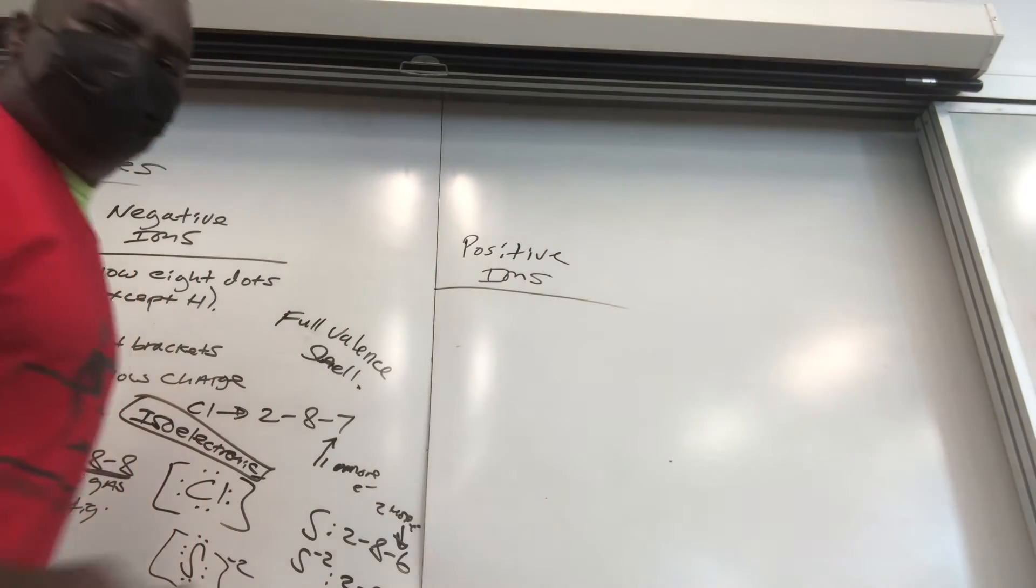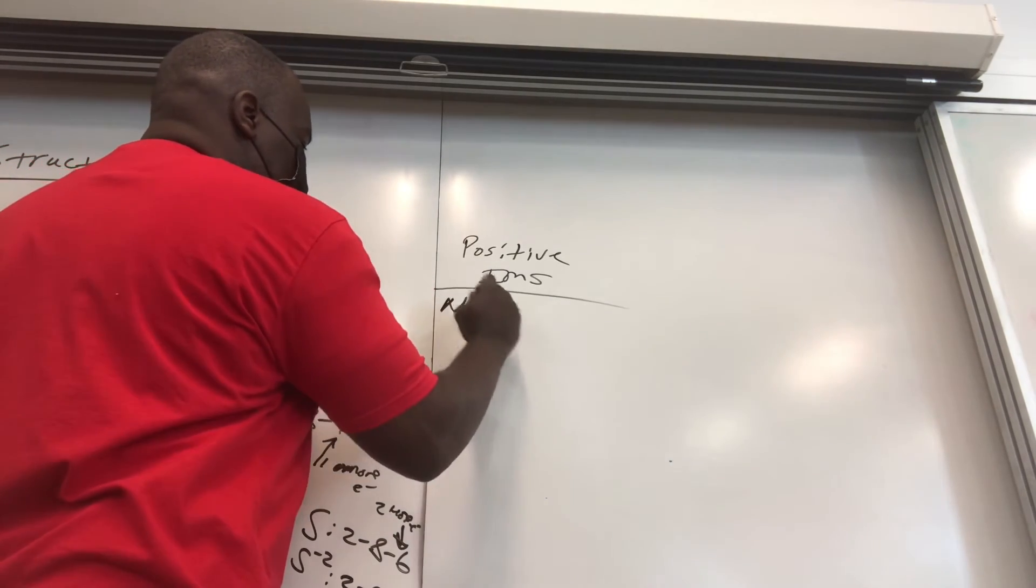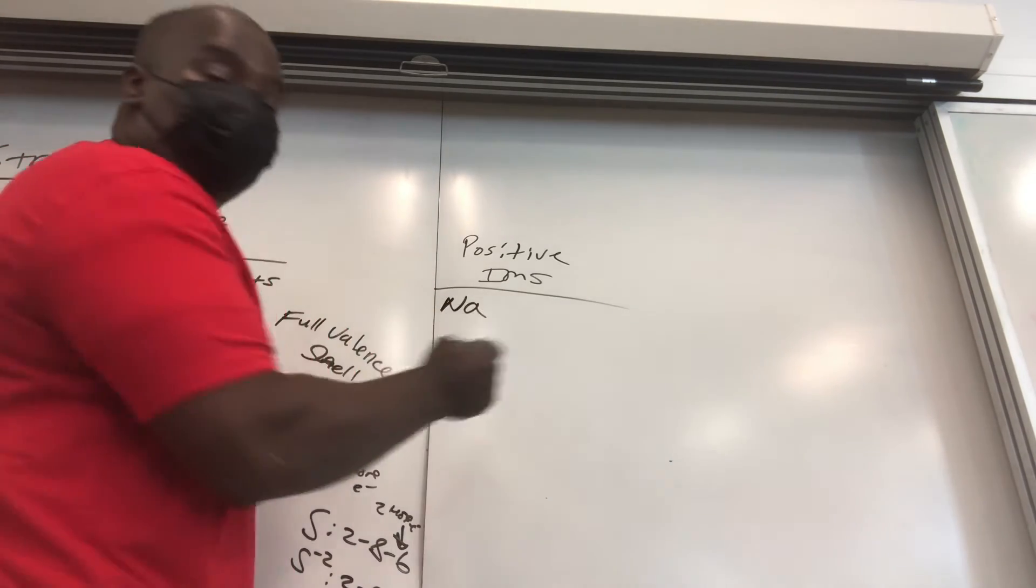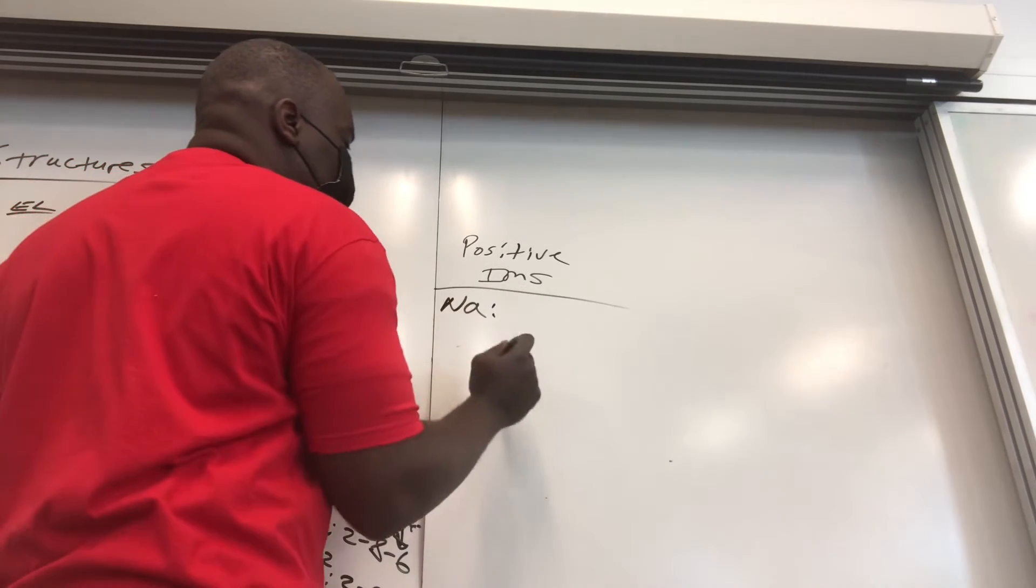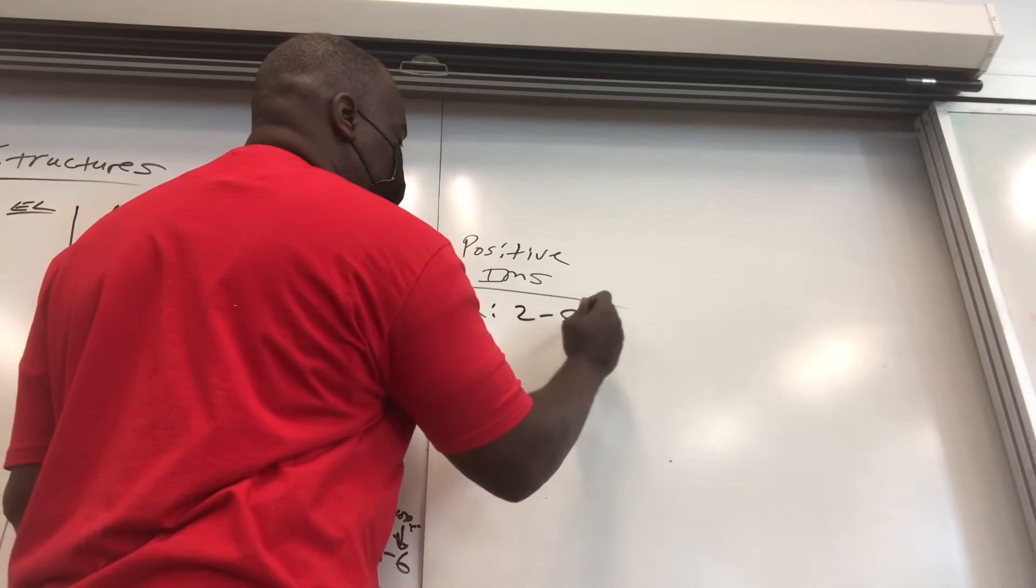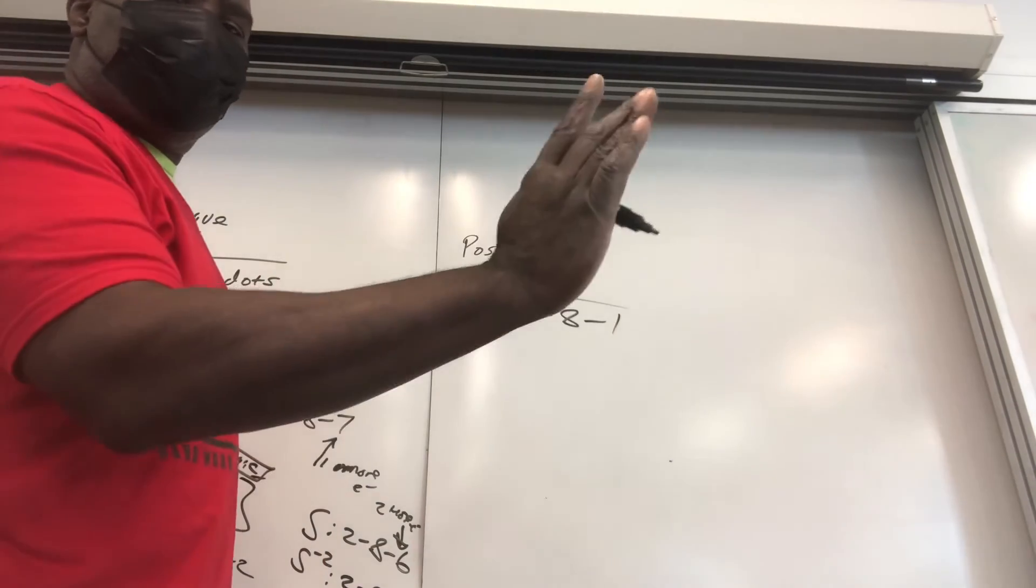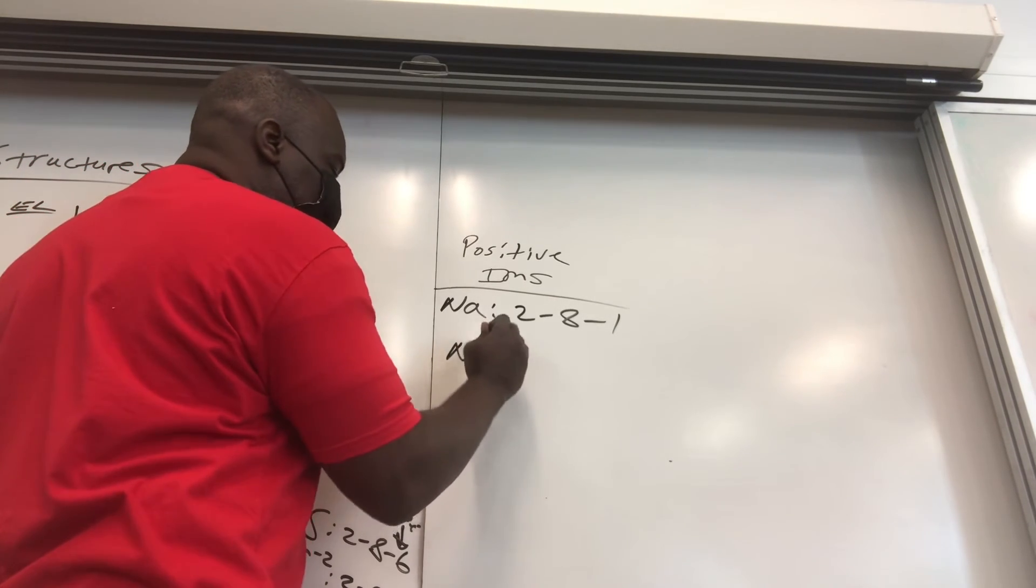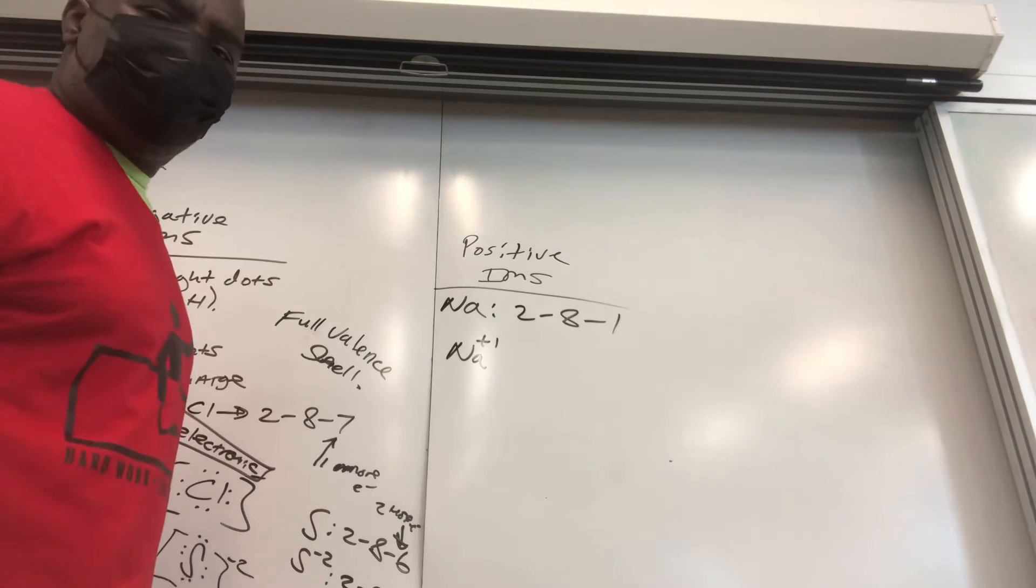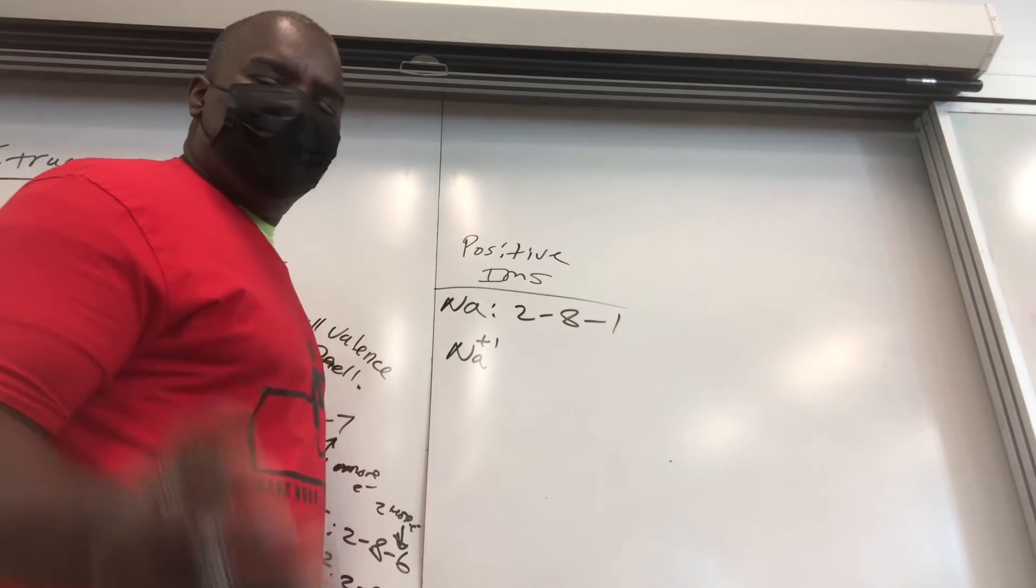Now for positive ions, they're pretty cool also. Let's say we got sodium. Let's do sodium. We did sodium as a neutral atom. Let's do sodium as a positive ion and compare and contrast. So sodium, as we said before, it's 2-8-1. Now if you look on your reference table, sodium, the top right corner, you'll see sodium tends to form a positive ion Na plus 1. There's a reason for that. Sodium is a metal, and metals tend to lose their electrons.